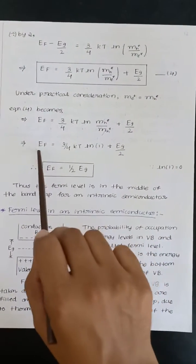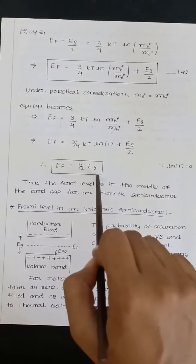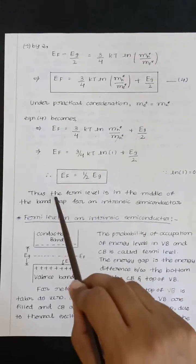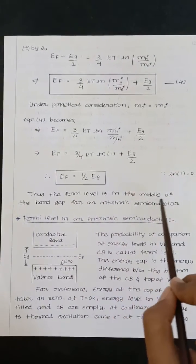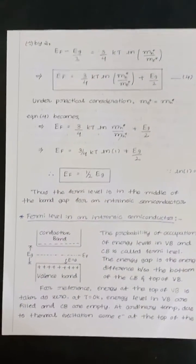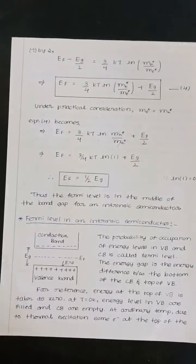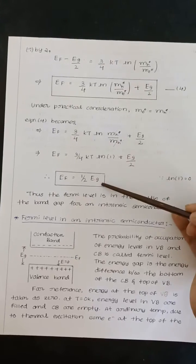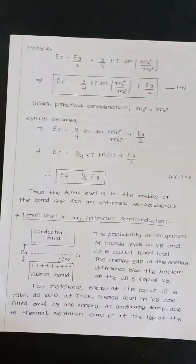Next what will remain? EF equals half of EG. Thus the Fermi level is in the middle of the band gap for an intrinsic semiconductor. This is the relationship between Fermi energy and energy gap for an intrinsic semiconductor.